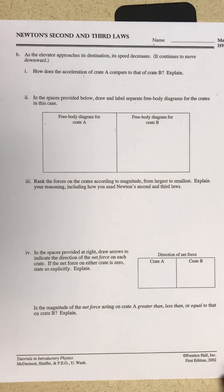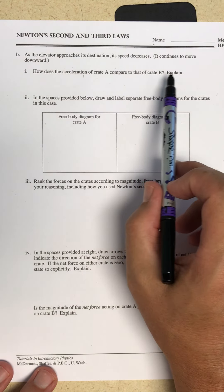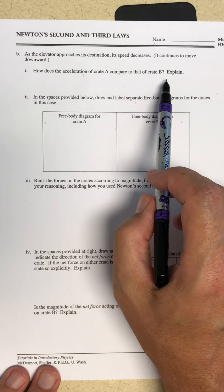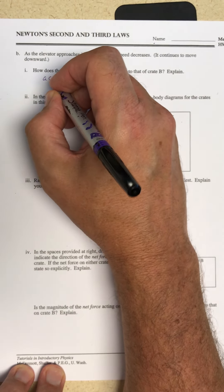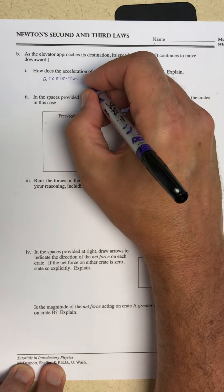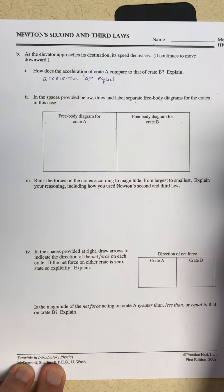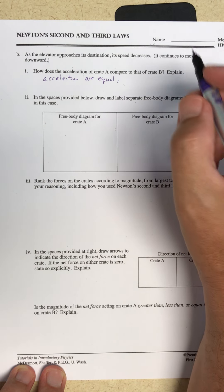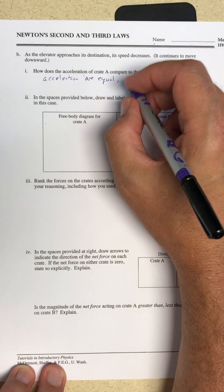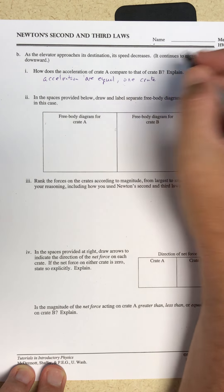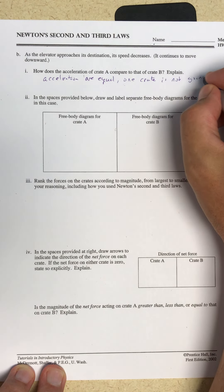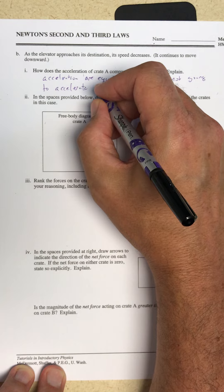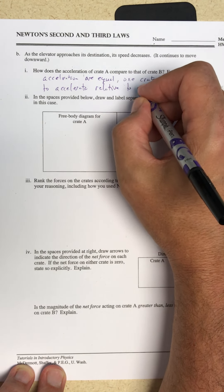As the elevator approaches its destination, its speed decreases — it continues to move downward. How does the acceleration of crate A compare to that of crate B? Those accelerations are going to be equal. I know that because I'm not going to have one crate start moving relative to the other crate — they're going to move together. One crate is not going to spontaneously start moving relative to the other. That would be a very surprising elevator.